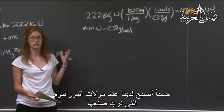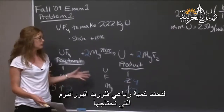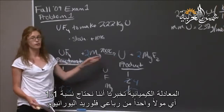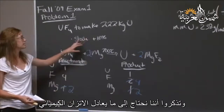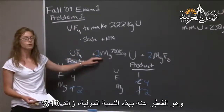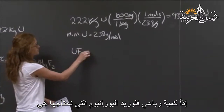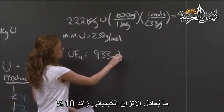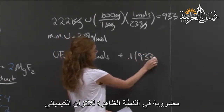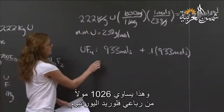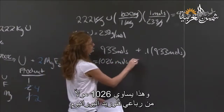We have the number of moles of uranium we want to make. Now we can use the chemical equation to determine how much uranium tetrafluoride we need. The equation tells us a 1-to-1 mole ratio of uranium tetrafluoride to uranium. However, we need to go back to the problem: we need the stoichiometric equivalent plus 10%. So the amount of uranium tetrafluoride needed equals the stoichiometric equivalent plus 10% of that, which equals 1,026 moles of uranium tetrafluoride.